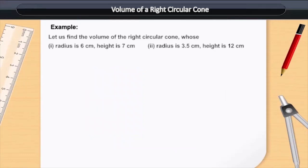For example, let us find the volume of the right circular cone for the following cases. 1. Radius is 6 cm, height is 7 cm. 2. Radius is 3.5 cm, height is 12 cm.